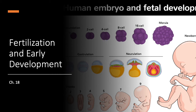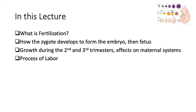Welcome to our last lecture. In this lecture specifically, I'll be focusing on the early sections of chapter 18 to discuss fertilization and early development of the human embryo. We are going to talk about fertilization, how a single-celled zygote develops to form an embryo and then a fetus, growth during the second and third trimesters, effects on the maternal systems, and the process of labor — everything from conception to birth.